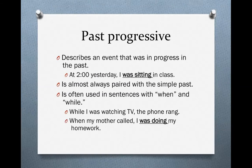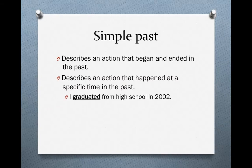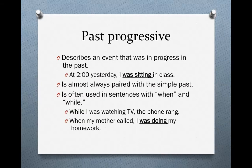The past progressive, on the other hand, describes an event that was in progress in the past. Now compare this sentence with the sentence I just showed you. At 2 o'clock yesterday, I was sitting in class. We do have a specific time, just like the previous sentence — 2002. However, at this specific time yesterday, the action was not completed. It was still in progress.